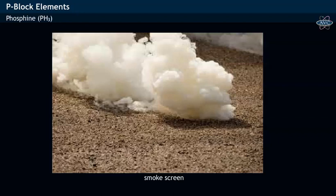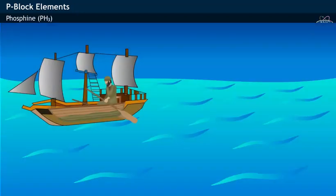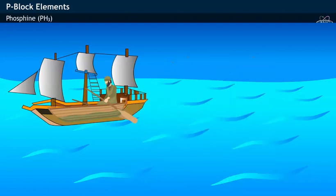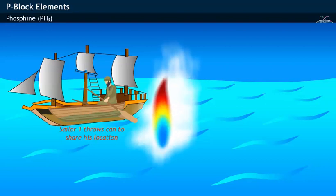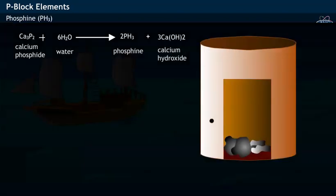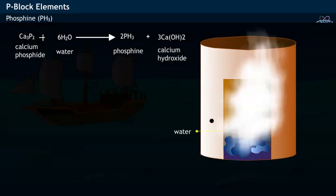Generally, phosphine is used in smoke screens which are used by police to clear attacking mobs. When cans containing calcium phosphide (Ca₃P₂) are punched with holes and thrown, certain gases are evolved which are used for signaling purposes. Here, calcium phosphide (Ca₃P₂) reacts with water and evolves phosphine gas, which is used in Holmes signals.